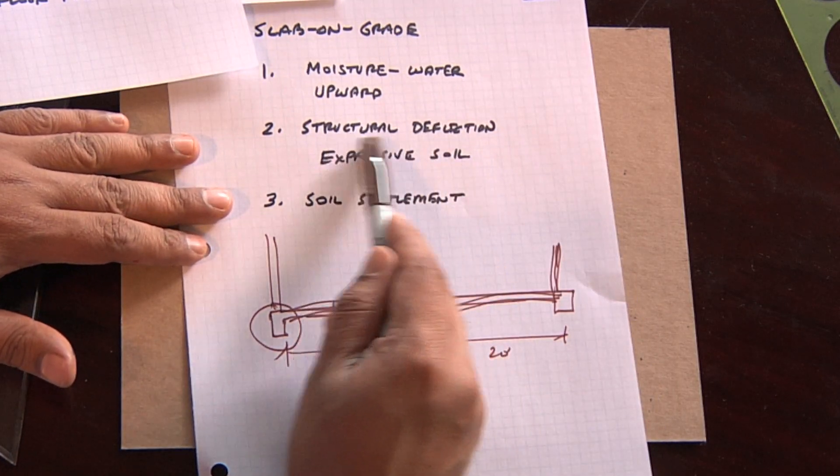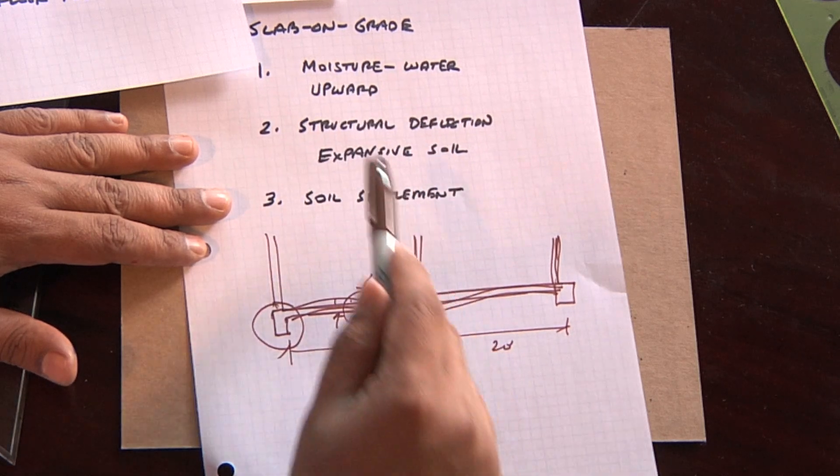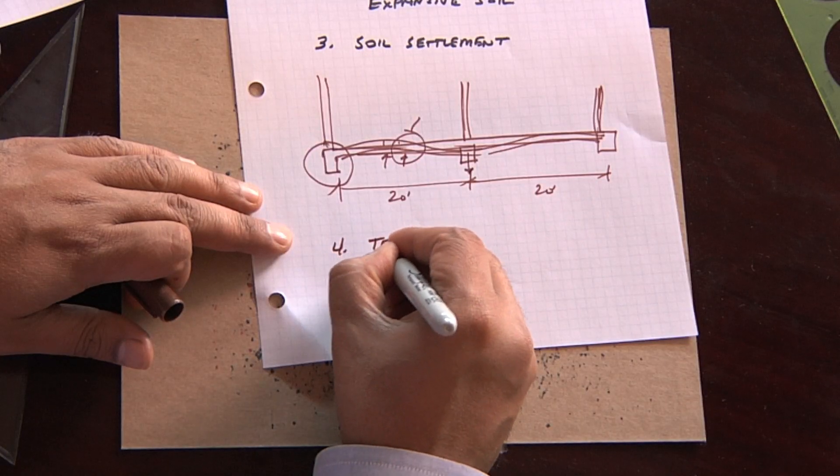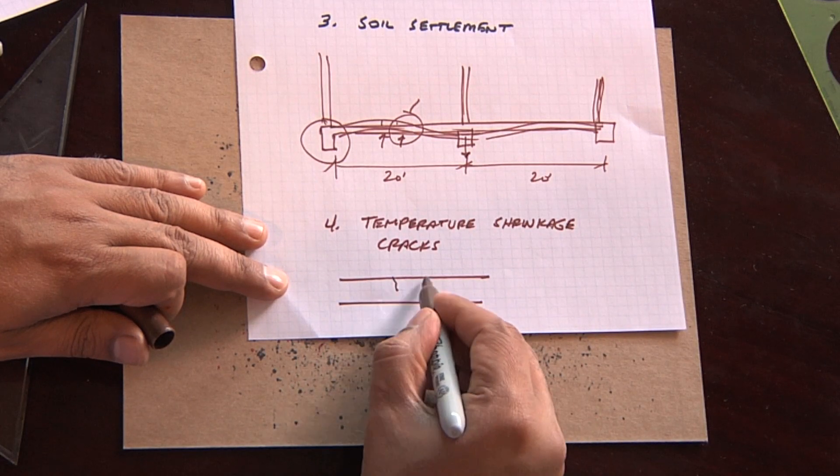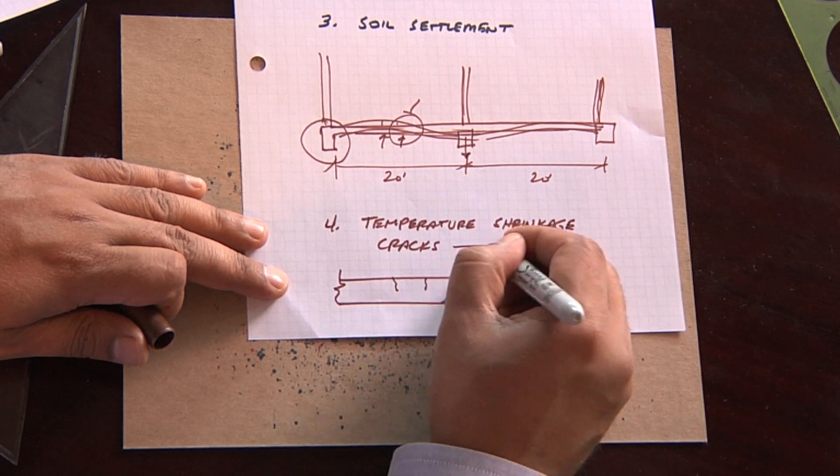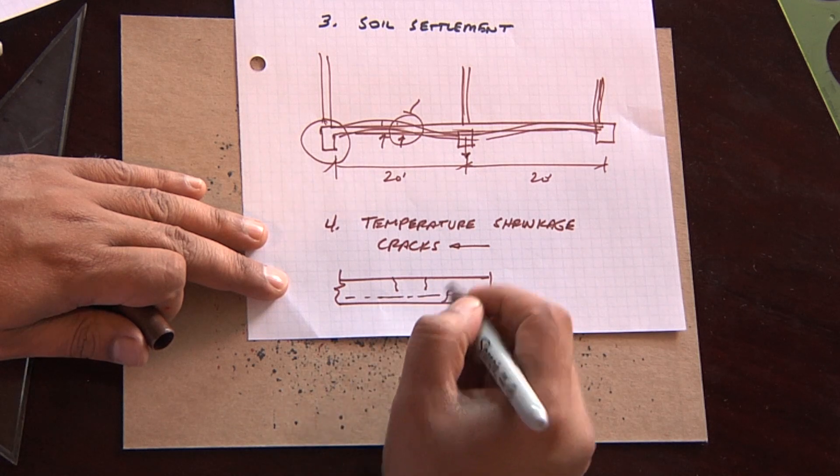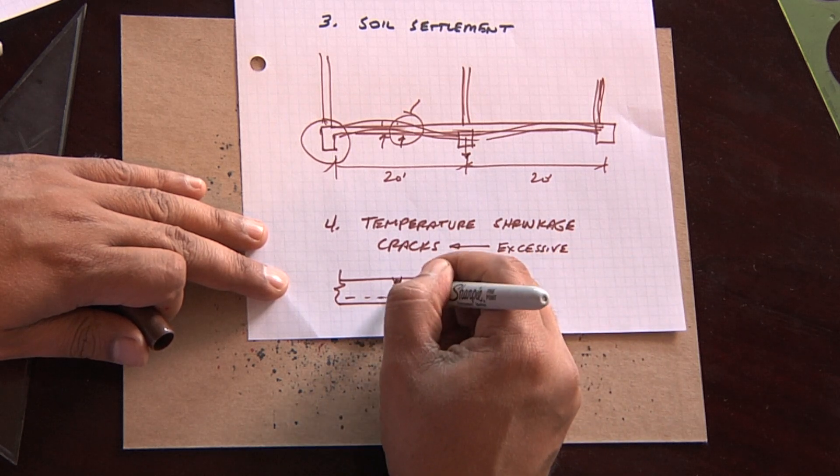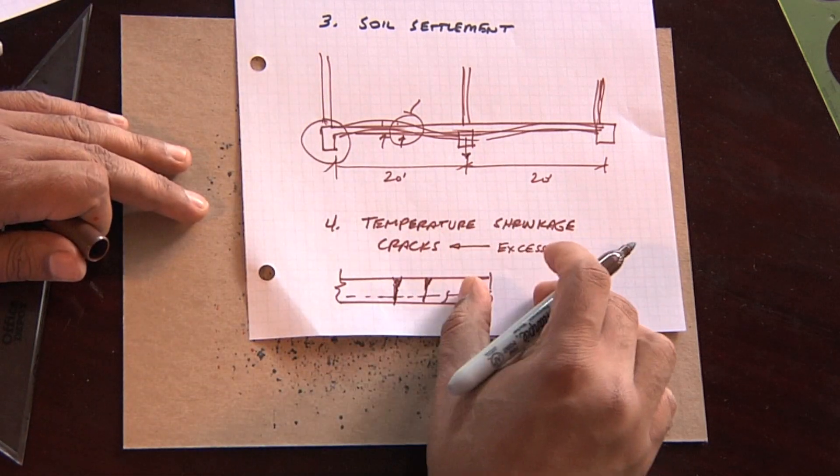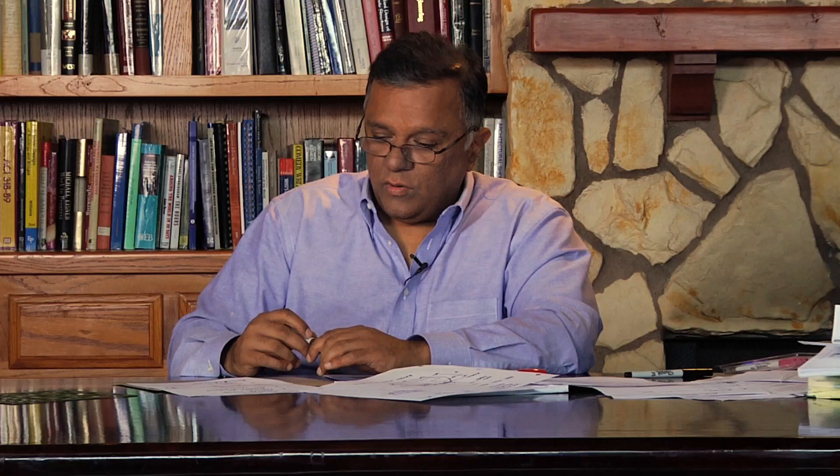So, soil settlement, structural deflection due to expansive soil, moisture and water going upward, very common problems. Another thing that comes up with slab on grade systems is what we call temperature shrinkage cracks. And so what happens there is the slab will exhibit some normal cracking, but if it does not have the adequate steel, if the steel is not there, this could become quite excessive. And I've actually seen situations where the slab is actually cracked all the way through and separated into separate pieces. And then that becomes a very expensive repair. These are very common problems that occur all over the United States, but in Southern California, we tend to see a lot of these.